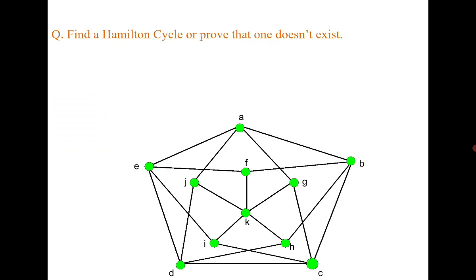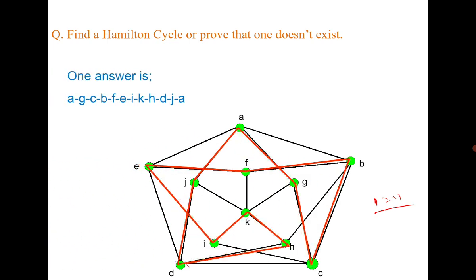Last question: either prove the graph is not Hamiltonian, or if it is, find a Hamiltonian cycle. This example is interesting because if you try to find its closure, it is the same graph — it has 11 vertices and the degree sum of any pair of non-adjacent vertices is less than 11, so the closure is the same graph. By the previous results we cannot directly conclude it is Hamiltonian, so you either need to disprove it (as was done for the Petersen graph) or find a Hamiltonian cycle. The answer is: it is Hamiltonian, and here is the required Hamiltonian cycle.